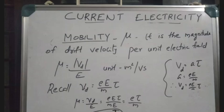Drift velocity Vd is equal to eEτ by m, where τ is the relaxation time. Therefore, the final equation for mobility is μ equal to eτ by m. Mobility is the magnitude of drift velocity per unit electric field, and this is the simple derivation: μ equal to eτ/m.